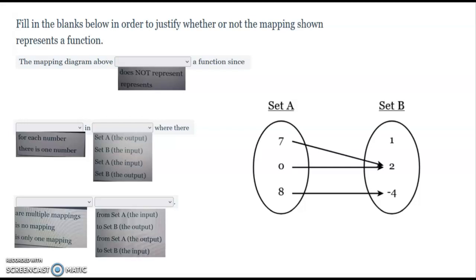It'll give you these drop-down boxes and you basically fill in the blank. It says fill in the blanks below in order to justify whether or not the mapping shown represents a function. So first you figure out if it's a function or not. Like I said before, if you got two lines coming from Set A, then it's not a function. But on this one we have one line here, one line here, and one line here. So it is a function.